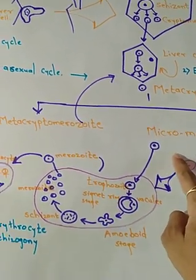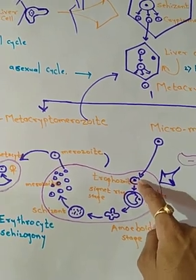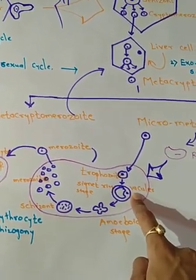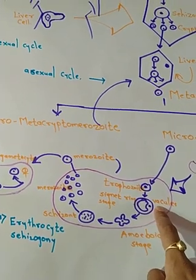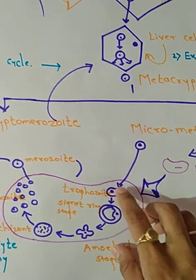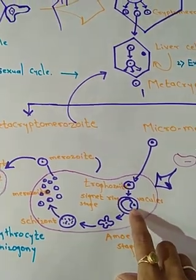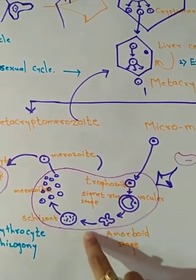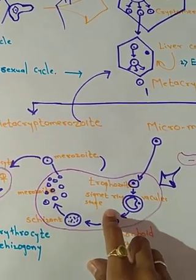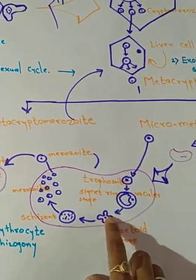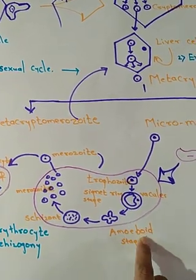When the metacryptomerozoite enters the RBC, it forms the trophozoite. The trophozoite looks spherical, and the nucleus becomes quite permanent. Then a vacuole is present, and in the next step the vacuole becomes very large and pushes the nucleus to the periphery, making it look like a ring-like structure called the signet ring stage trophozoite. The vacuole then disappears and it becomes a structure similar to an amoeba — this is called the amoeboid stage.